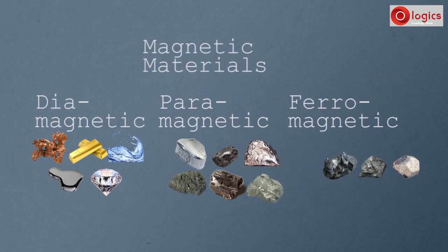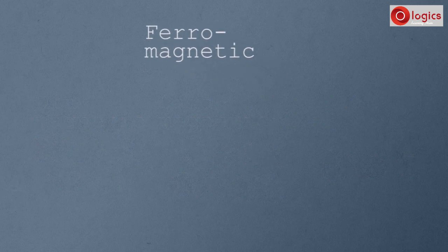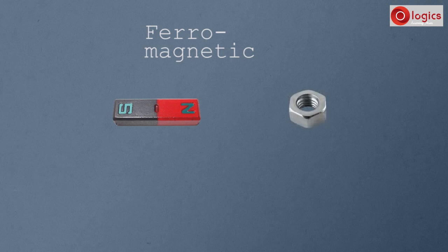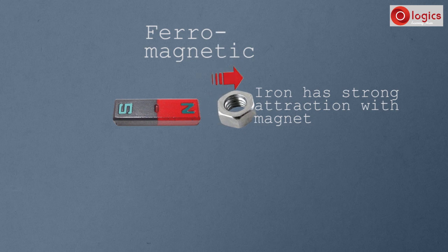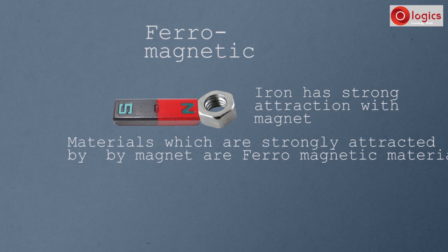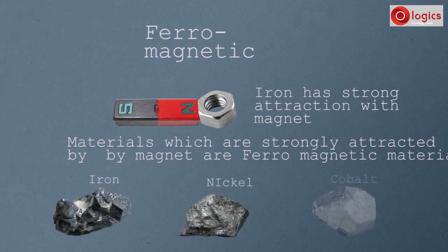Now let's see what are ferromagnetic materials. Take a magnet and a piece of iron. Observe there is a strong force of attraction between the magnet and iron. With great force and effort, iron can be separated from the magnet due to this attraction. We can say iron is a ferromagnetic material. Materials which are strongly attracted by the magnet are ferromagnetic materials. Along with iron, nickel and cobalt are also ferromagnetic materials.